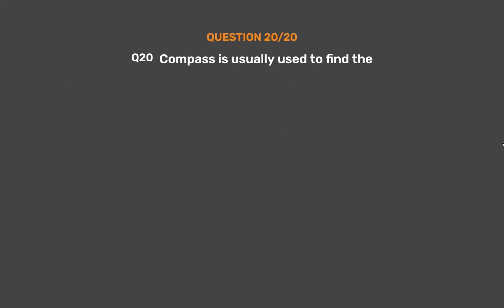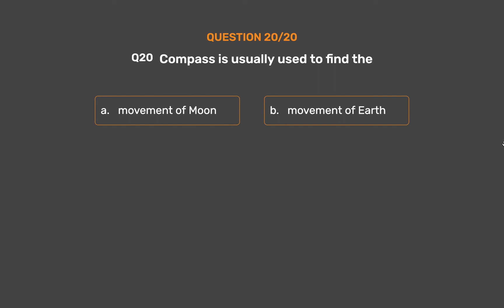Question number 20. A compass is usually used to find the — Option A: Movement of Moon. Option B: Movement of Earth. Option C: Direction. Option D: Distance.